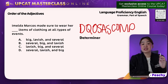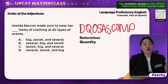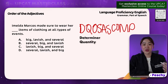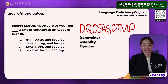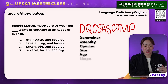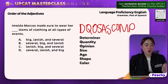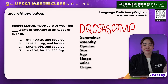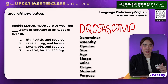So D means determiner, Q is for quantity, O is for opinion, S is size, A is age, S is shape, C is color, O is origin, M is material, and T is purpose.